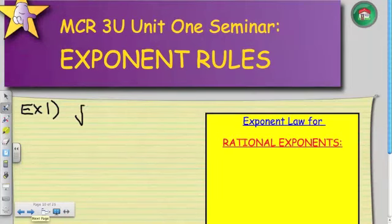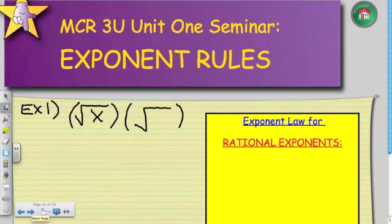So I have the square root of x multiplied by the cube root of x. Whenever we have radical expressions, it is best to work with them in rational form. So we're going to convert these radical expressions to rational exponents.